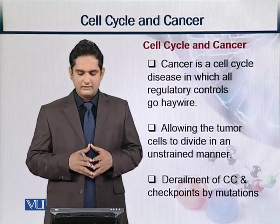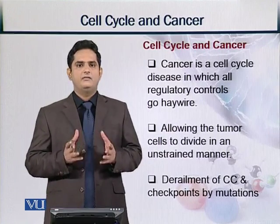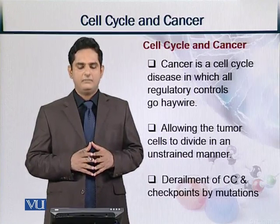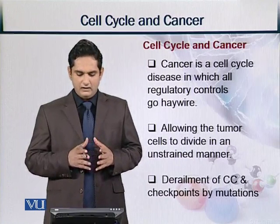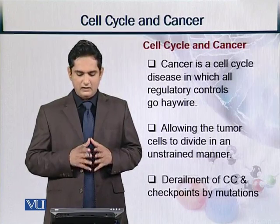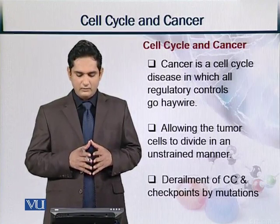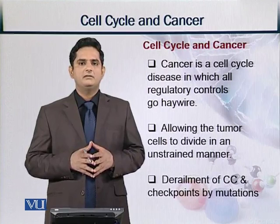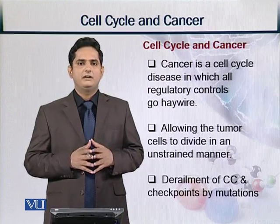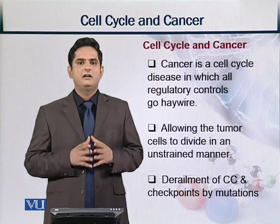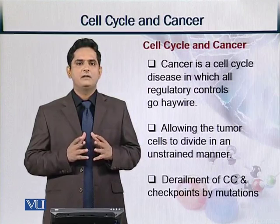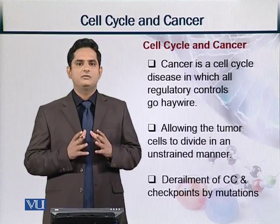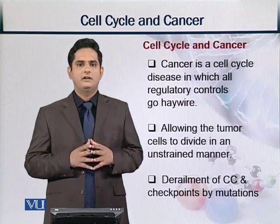So what is cancer with respect to the cell cycle? If we define cancer, it is basically a cell cycle disease in which all regulatory controls go haywire. Regulatory controls going haywire means that the cell cycle phase markers become abnormal.